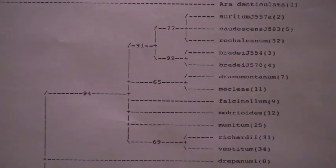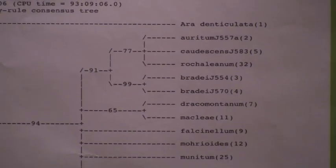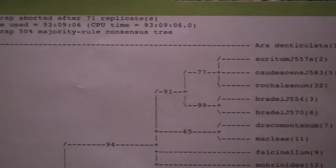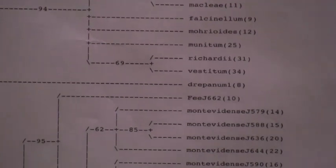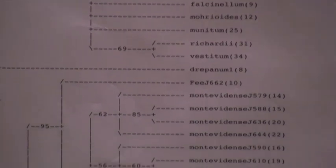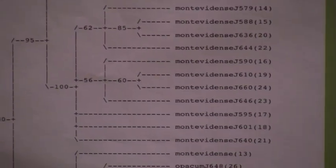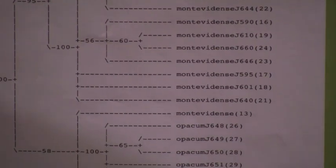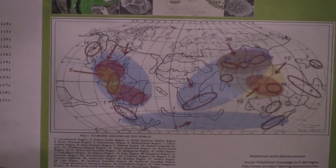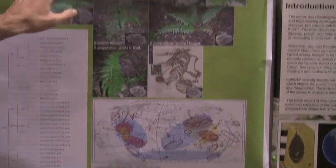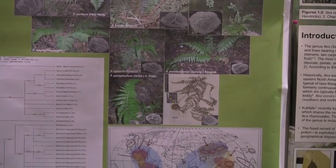Later we're going to start doing the nuclear genes, to figure out where the Brazilian plants are related to the other Polystichums in the world. Preliminary results show that most of the twice-pinnate species are related to the Andean clade, and the two single-pinnate and indusiate species are the only two of that kind in South America.